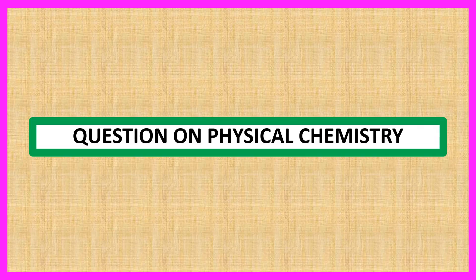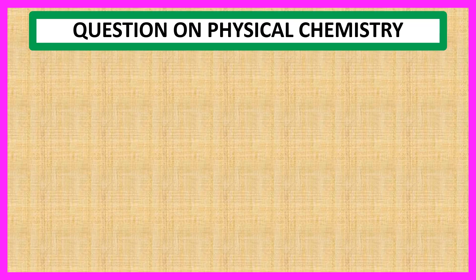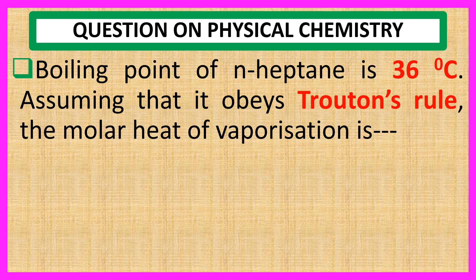Welcome everyone. Question on physical chemistry: the boiling point of n-heptane is 36 degrees centigrade. Assuming that it obeys Trouton's rule, find the molar heat of vaporization.